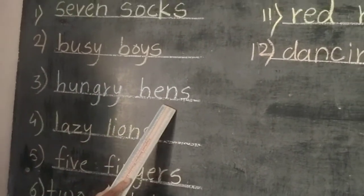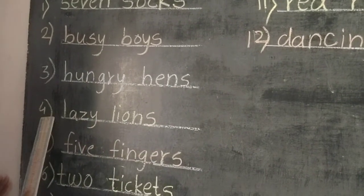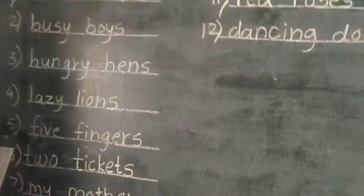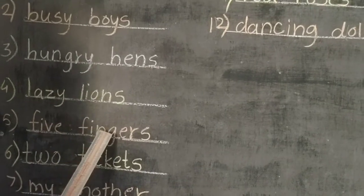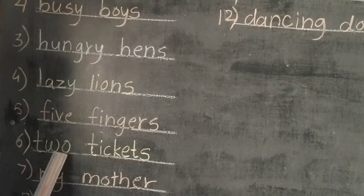Third, hungry hands, manje bhupe re lia kumdhya. Fourth, lazy lions, manje arshi siha. Fifth, five fingers, manje parts booty. Six, two tickets, manje don't ticket.